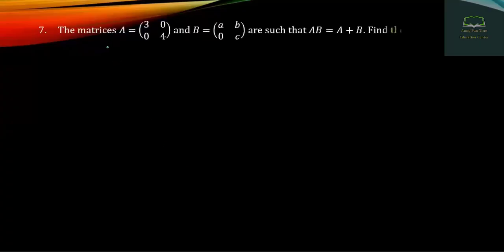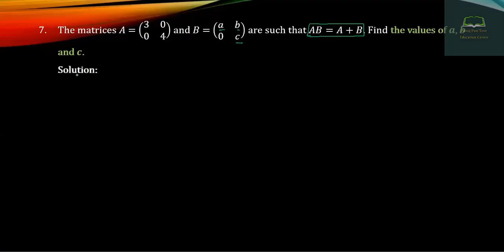Question number 7. A, B is more than A. B, C is more than A. If this is more than A, B, C, O. A, B is more than B and A, B is more than A, B, C. The solution is that AB plus B is more than B.